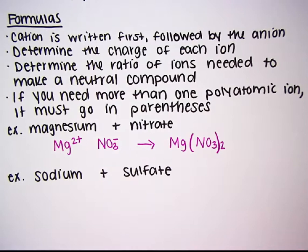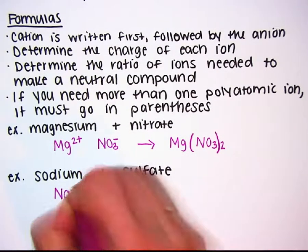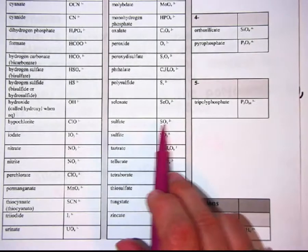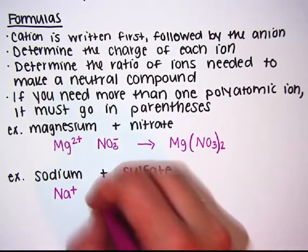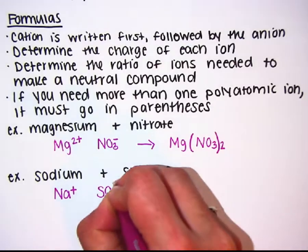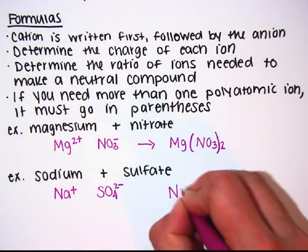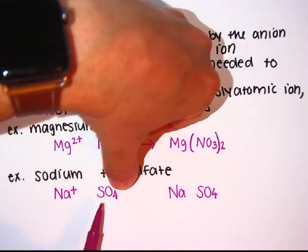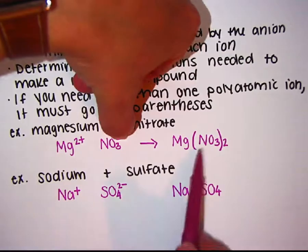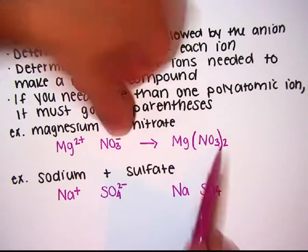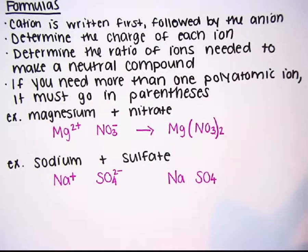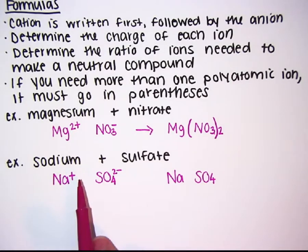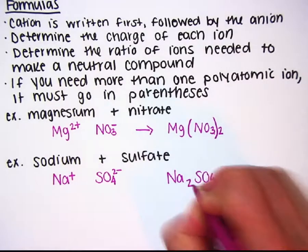Next: sodium and sulfate. Sodium is in group 1 and always forms a charge of positive 1. Sulfate is the polyatomic ion SO4 2 minus. The cation comes first, then the anion. When writing the polyatomic ion, include everything except the charge, so write SO4. Sulfate is minus 2, so I would need two sodiums to cancel that out. The formula is Na2SO4.